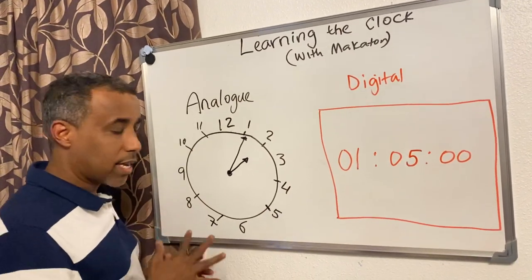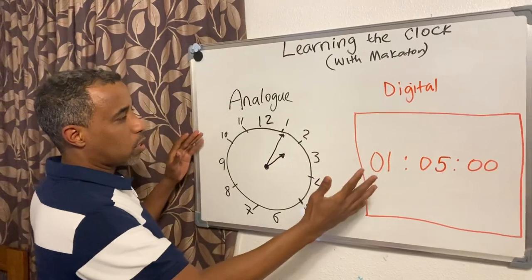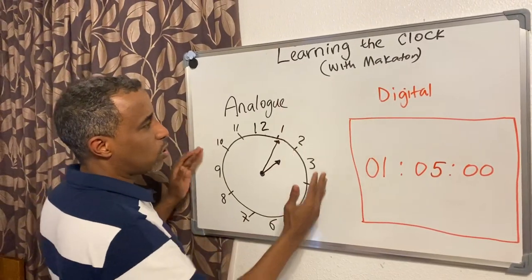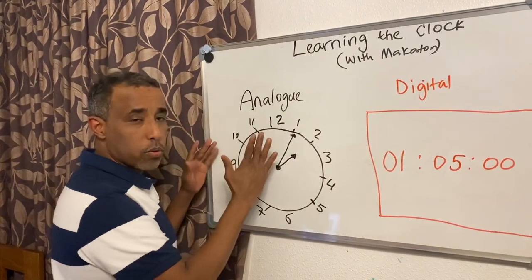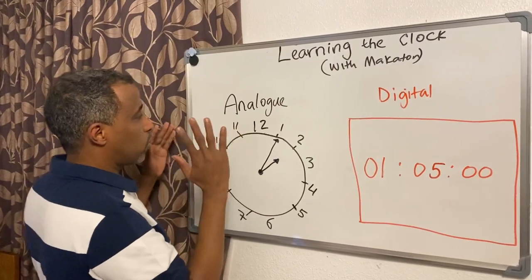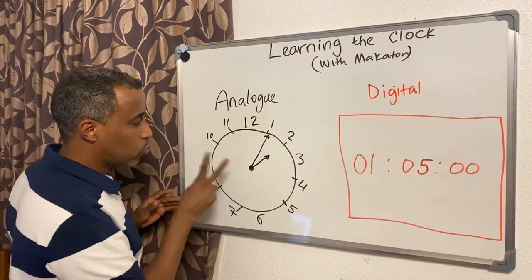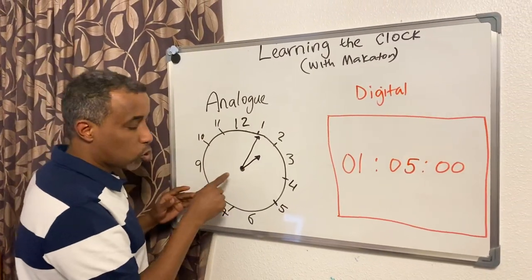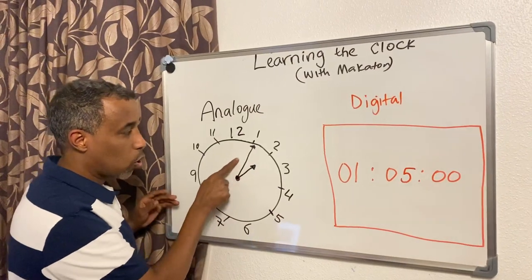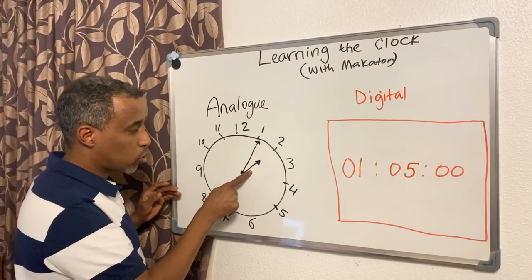In terms of the clock, we have two types: analog and digital. I'll go through analog first. Analog clocks have two hands: one short hand and one long hand.